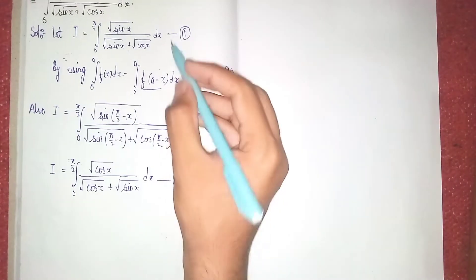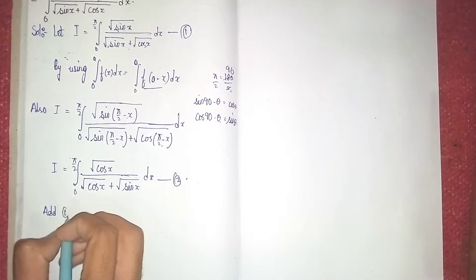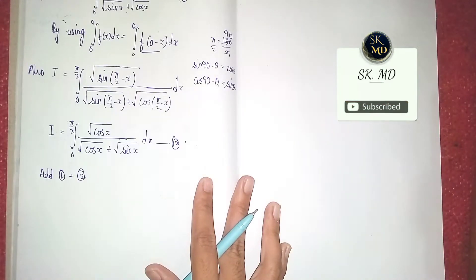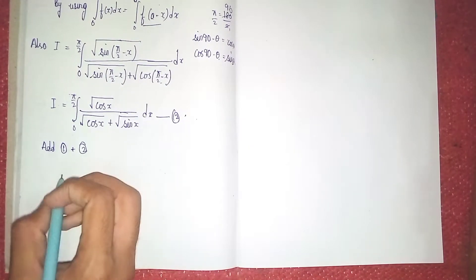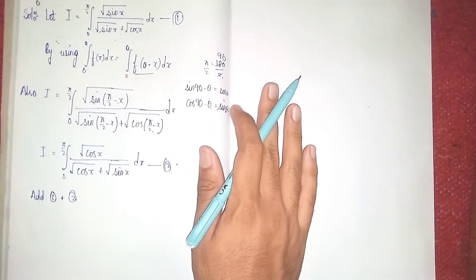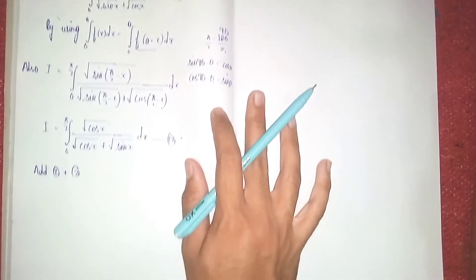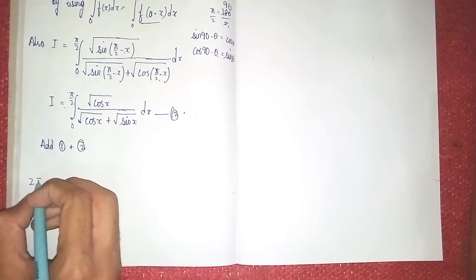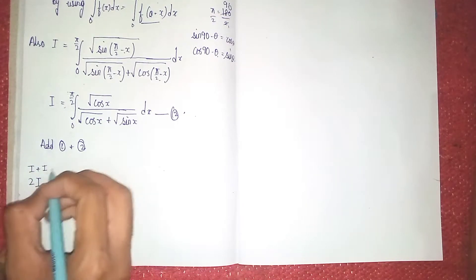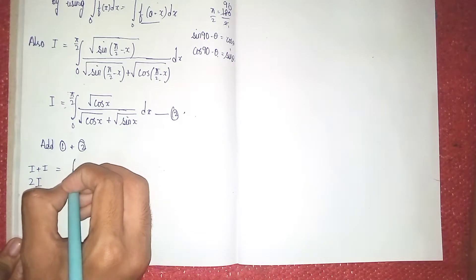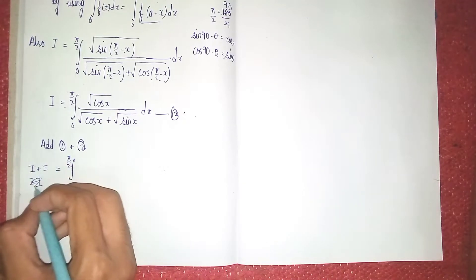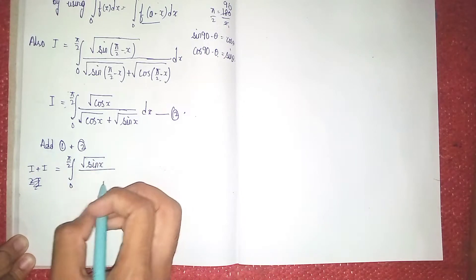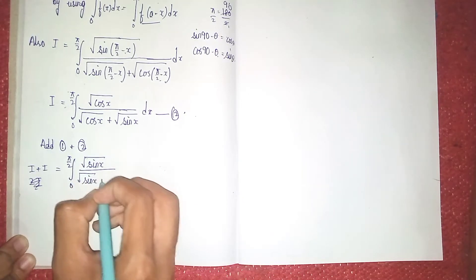Now add equation 1 and equation 2. We have to add these two functions. So I + I = 2I. The first function from equation 1: the integral from 0 to π/2 of √sin(x) / (√sin(x) + √cos(x)) dx.